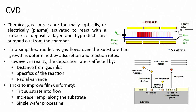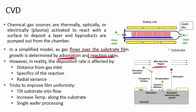In a simplified model, as gas flows over the substrate, film growth is determined by adsorption and reaction rates. The gas flows through the main gas flow region, undergoes gas-phase interaction, and is transported to the surface. Surface diffusion and reabsorption occur, followed by desorption of byproducts. Nucleation begins, then island and stab growth occur, gradually forming the deposited film.